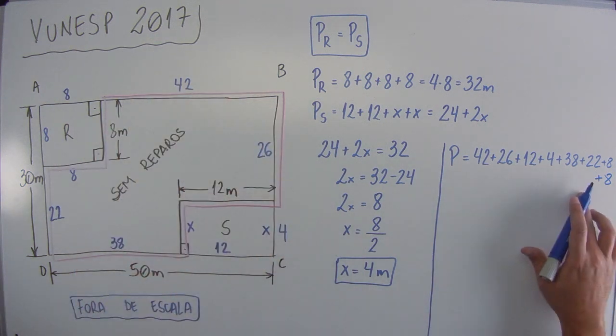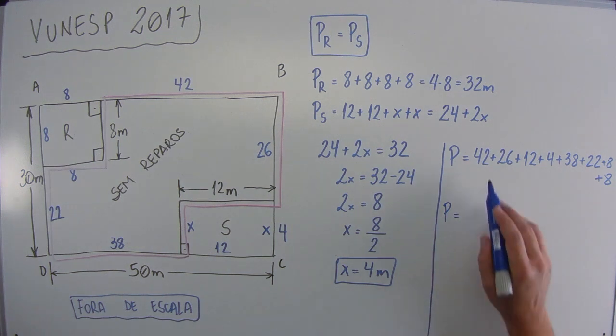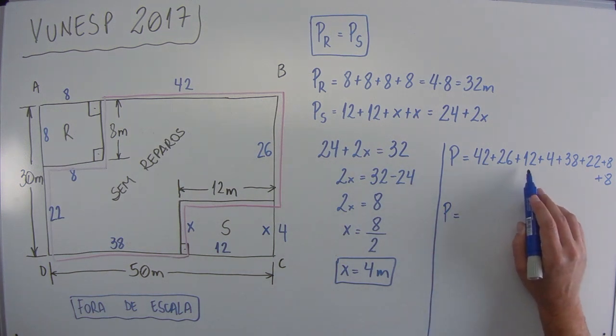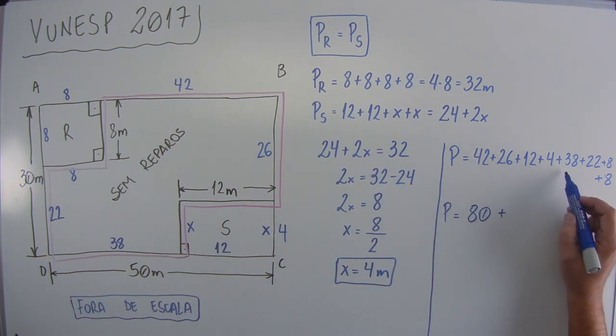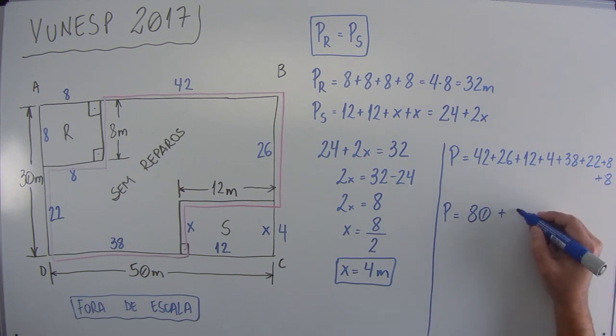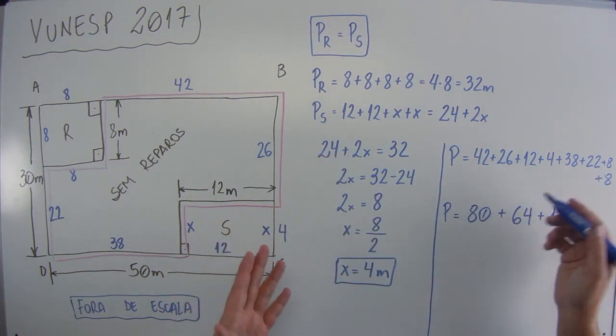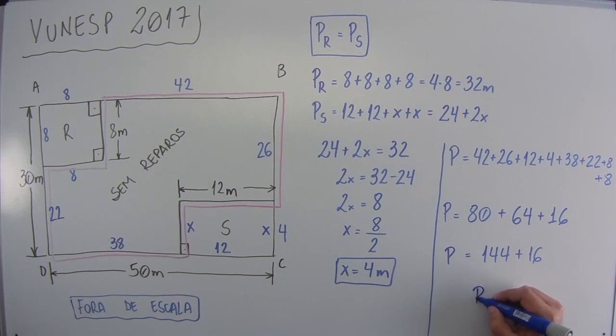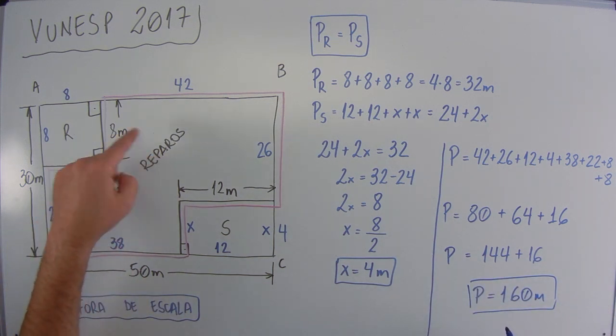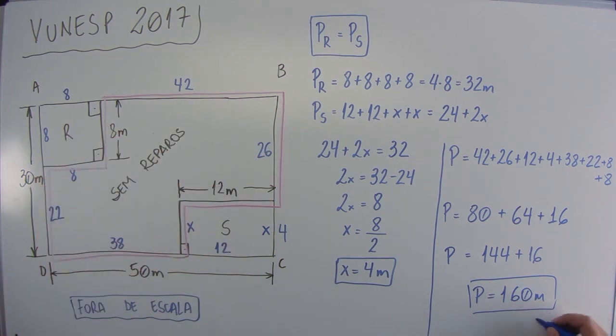Ou seja, esse contorno todo é essa soma gigantesca aqui. Vamos fazer essa continha aqui. 42 mais 26 vai dar 68, mais 12 vai dar 80, mais 4 mais 38 vai dar 42, mais 22, 64, mais 8 mais 8, 16. Aqui não importa como você faz a soma, desde que você faça certo, vai ficar aqui. 80 mais 64 vai dar 144, mais 16, 144 mais 16 é 160 metros. E esse perímetro de 160 metros, que é a área sem reparos, é o perímetro da área sem reparos, o contorno disso aqui está na alternativa D.